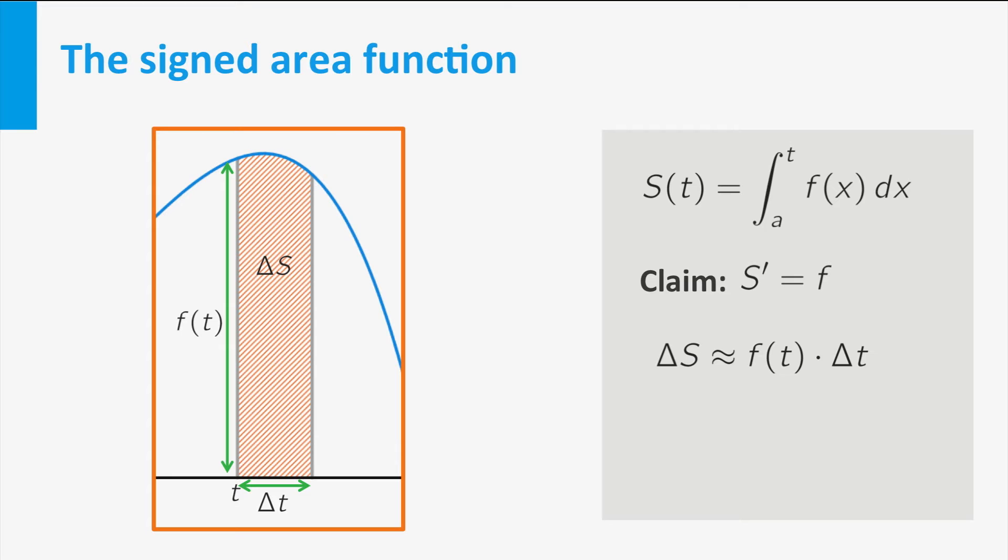We can make this approximation better by taking delta t smaller. It follows that the quotient of delta s and delta t is approximately f of t, and this becomes exact if we let delta t tend to zero. The limit of delta t to zero of the quotient is equal to f of t.